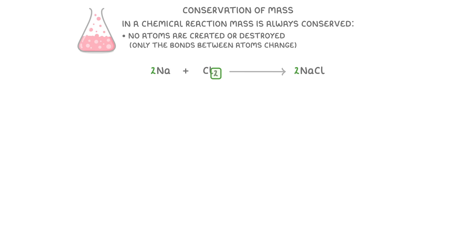We can also see this concept if we compare the total relative formula masses of each side. On the left, we have 2 x 23 for sodium, plus 2 x 35.5 for chlorine, which gives us 117. Then on the right, we have 2 x 23 plus 35.5, which is also 117. So we can see that both sides do balance.